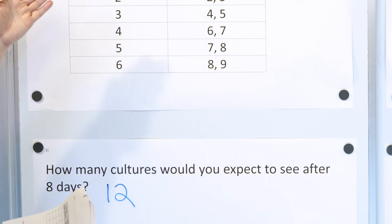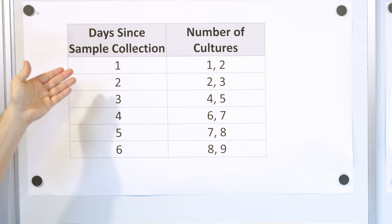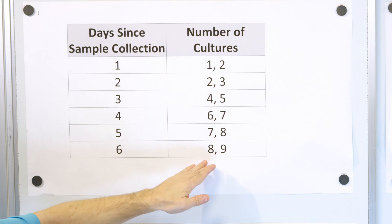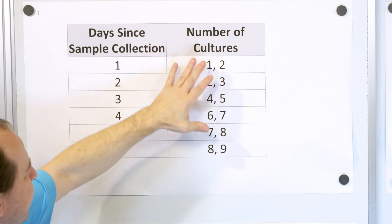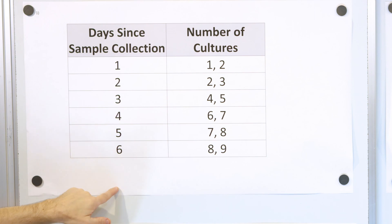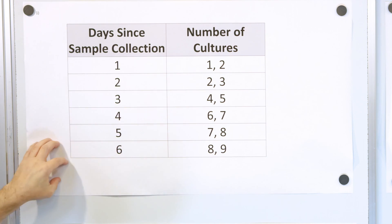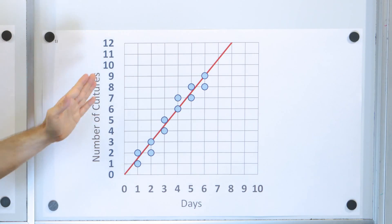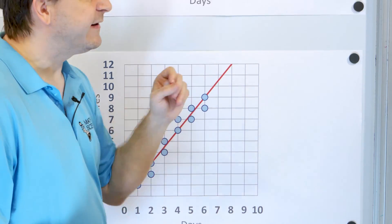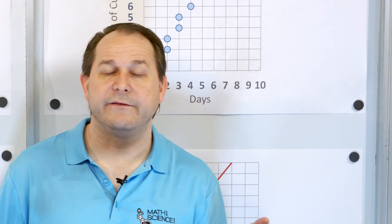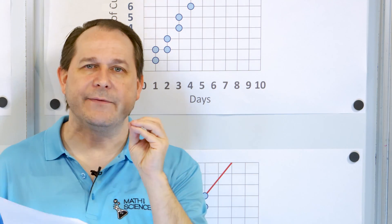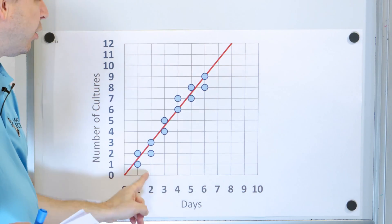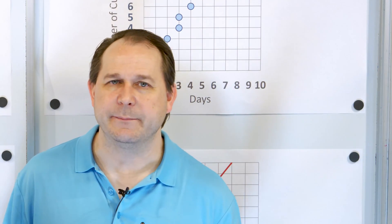If you look at the raw data and I ask how many cultures you'd expect after eight days, it's going to be difficult to come up with 12 because the numbers are just jumbled everywhere. But by drawing the data, drawing the line through the data, and using that line to predict something in the future — that's the best way to go about it, and it's visual. Now, the further away you extrapolate from the bulk of your data, the less accurate this line is going to be.